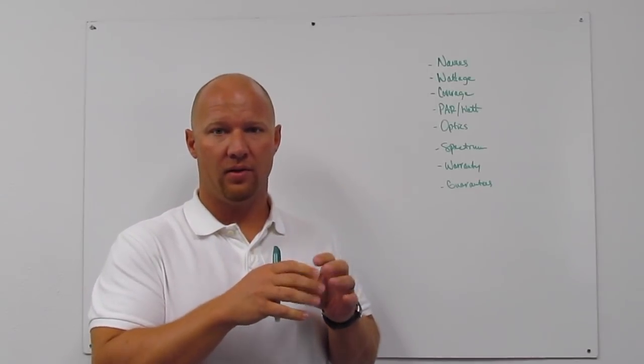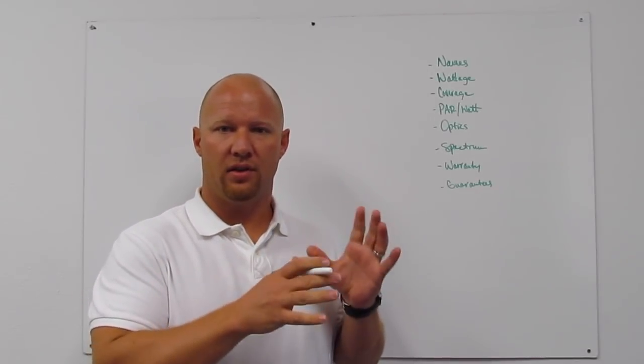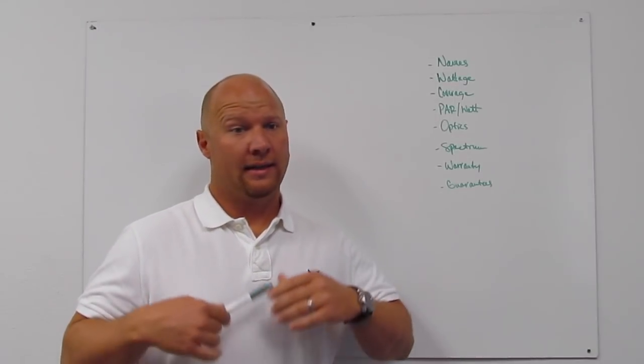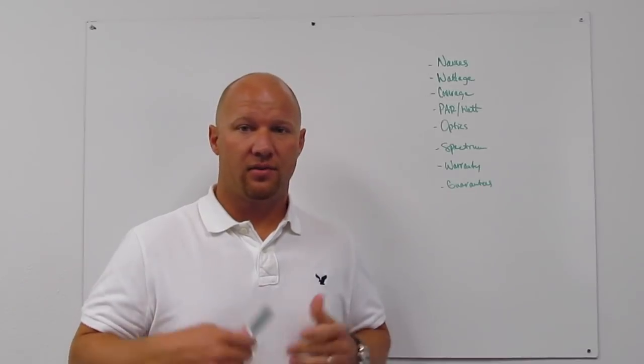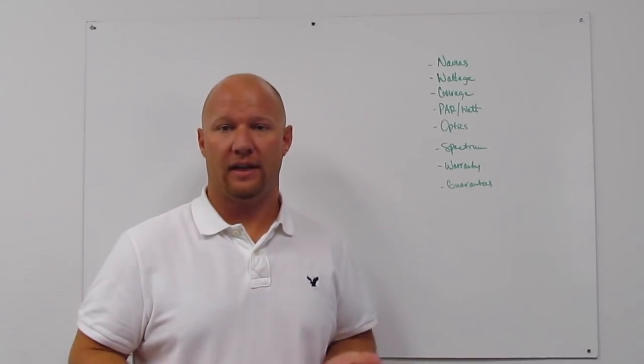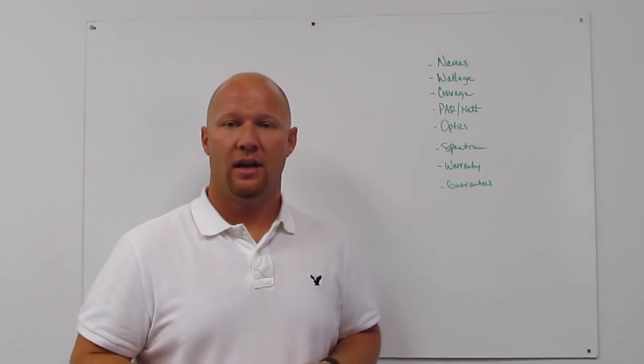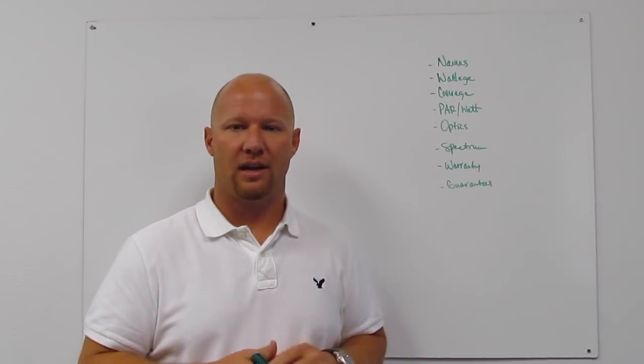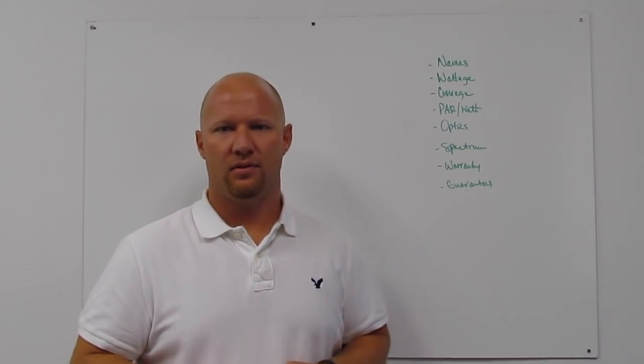At Advanced what's nice is we really try to focus on getting close to that, so if it's a 350 watt light we name it a 350. If it's a 100 watt light we'll name it a 100. DS100 for example will pull 93 watts, so we try to get as close to that as we can so it's not deceptive to you.